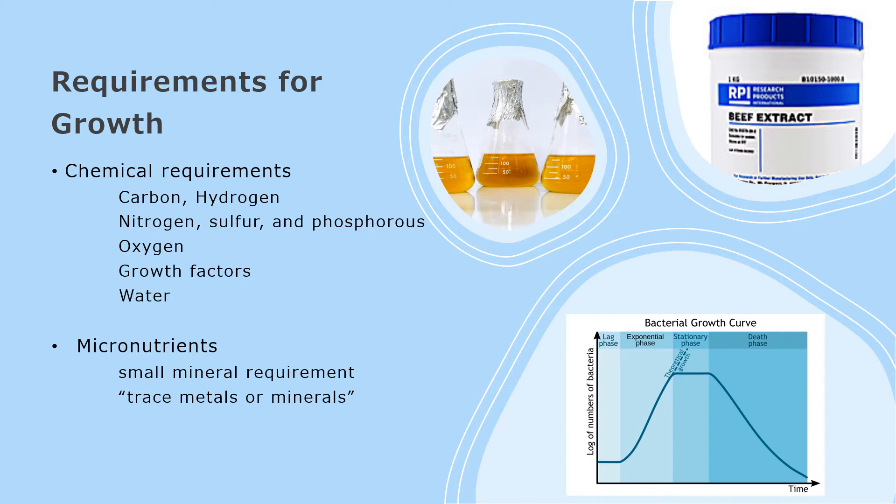To keep bacteria at exponential or maximum growth, as seen in the bacterial growth curve chart, bacteria need nutrients and essential factors like water and oxygen in constant supply.